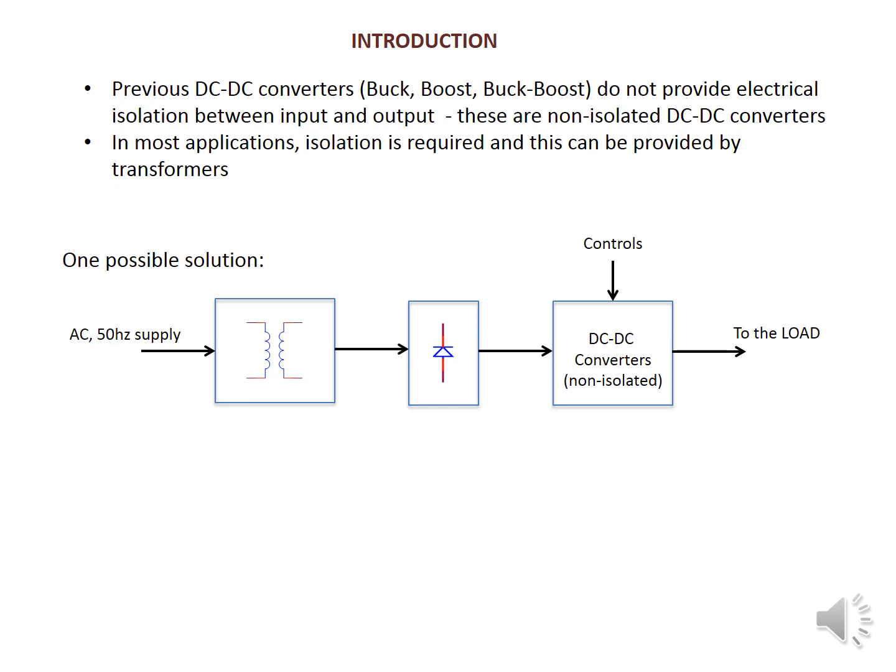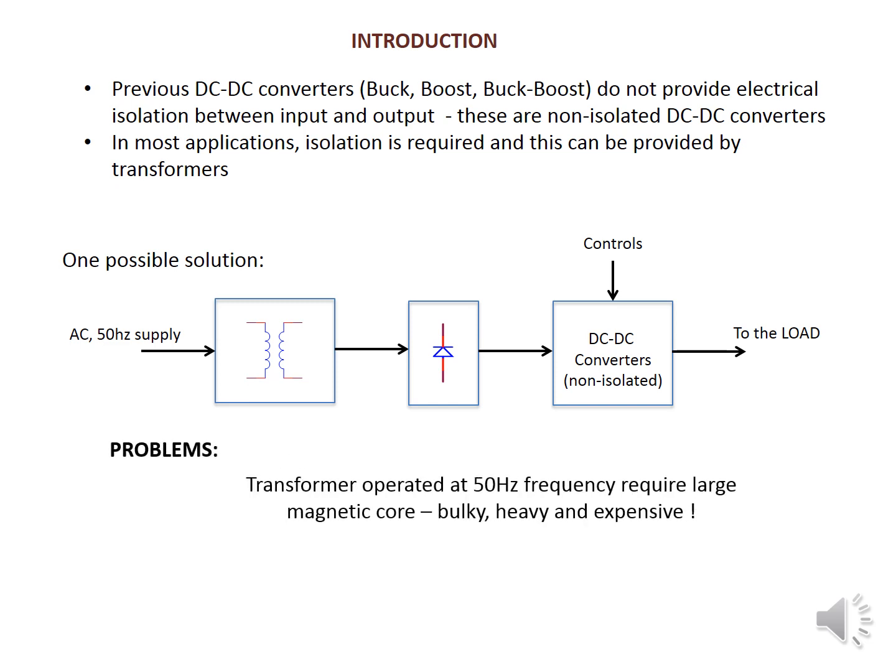In most applications, isolation — that is, separation — is required. One possible solution is to take the AC supply at 50 Hz to a transformer, then rectify it using a diode or transistor acting as a rectifier, converting AC voltage into DC supply. This DC is then given to a DC-to-DC converter which is non-isolated, and then given to the load.